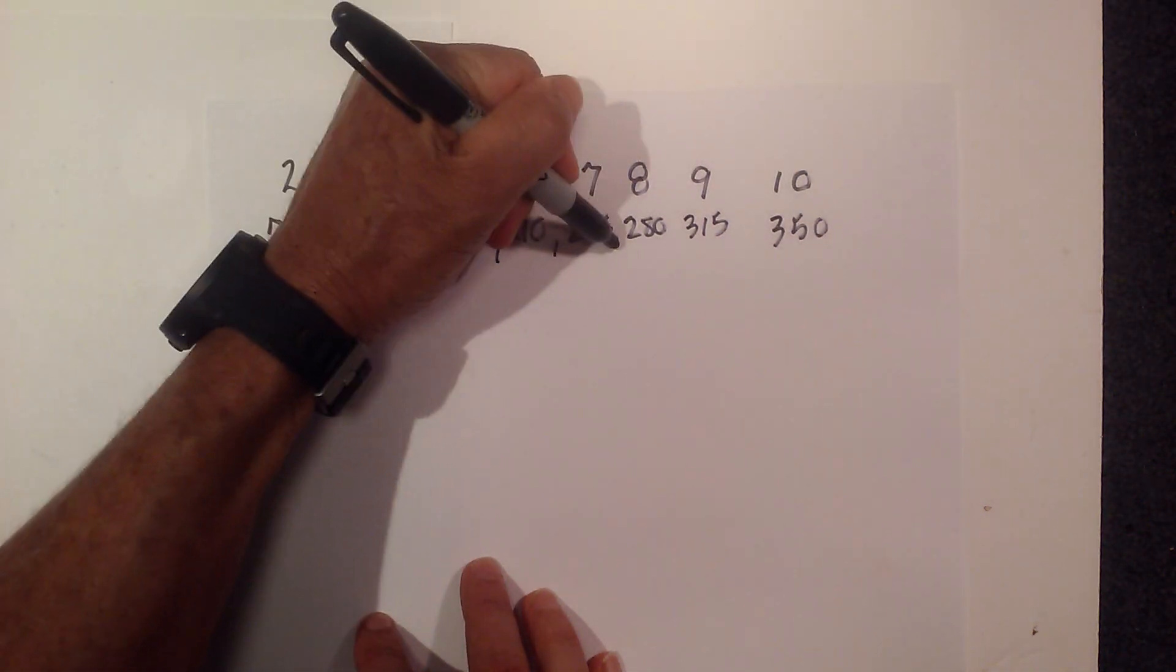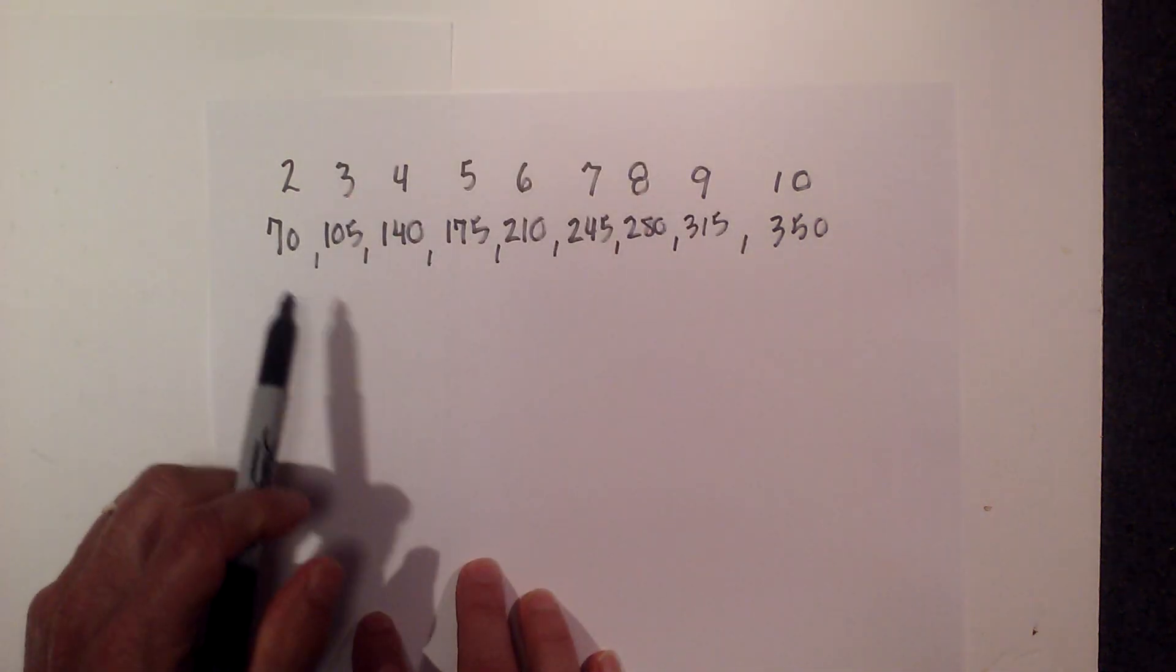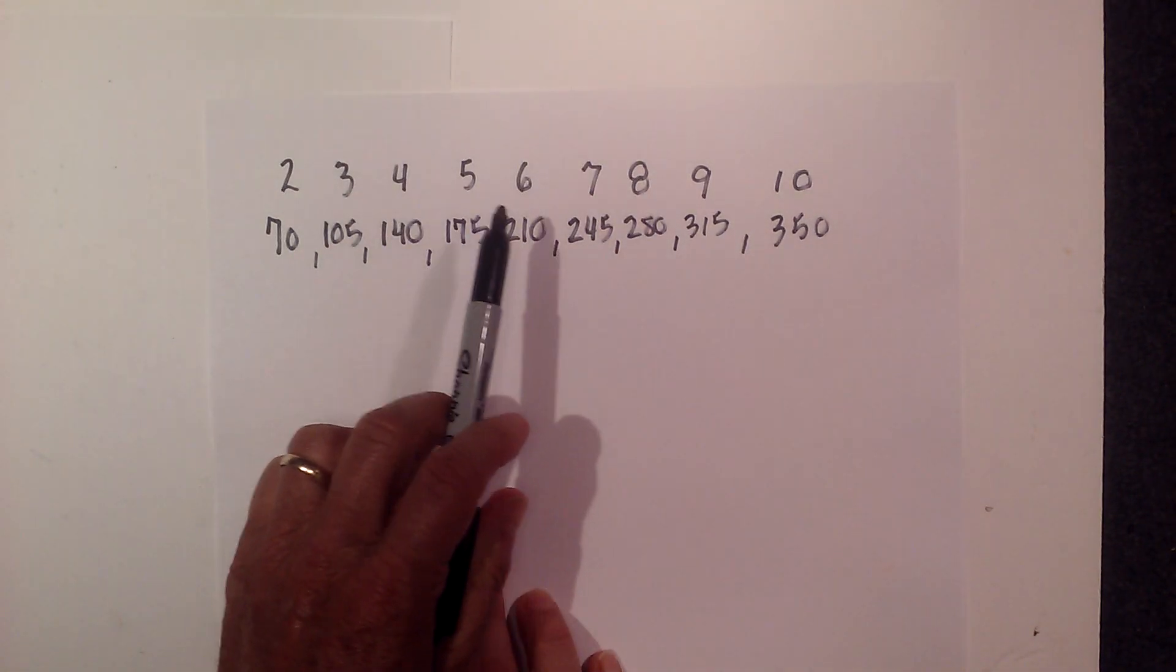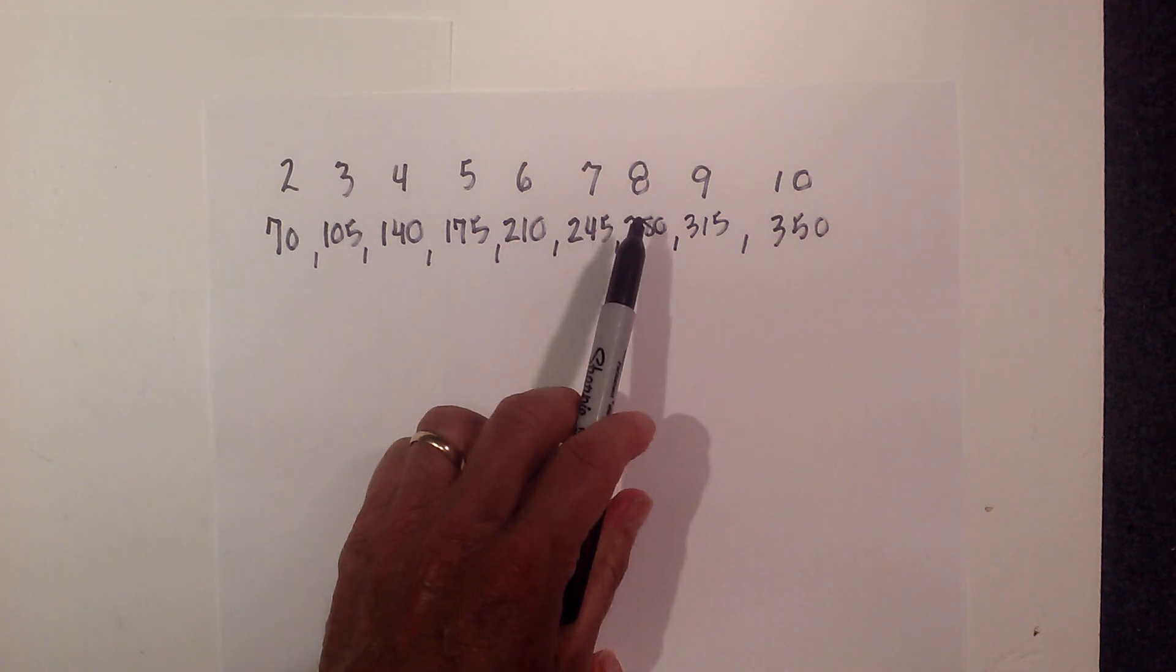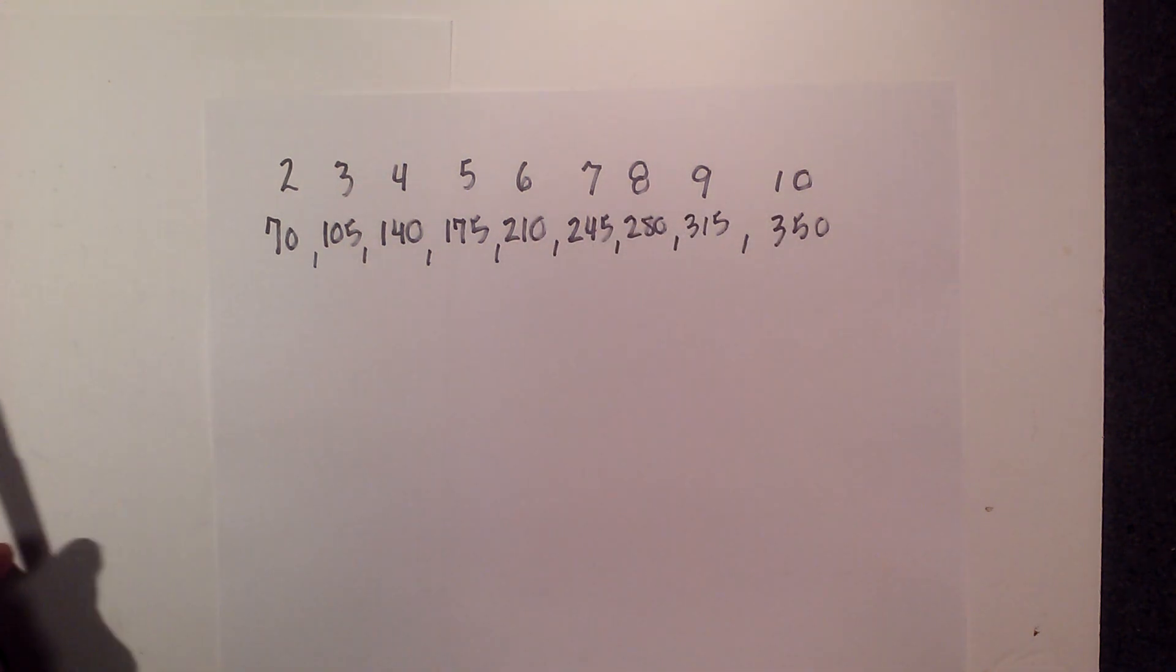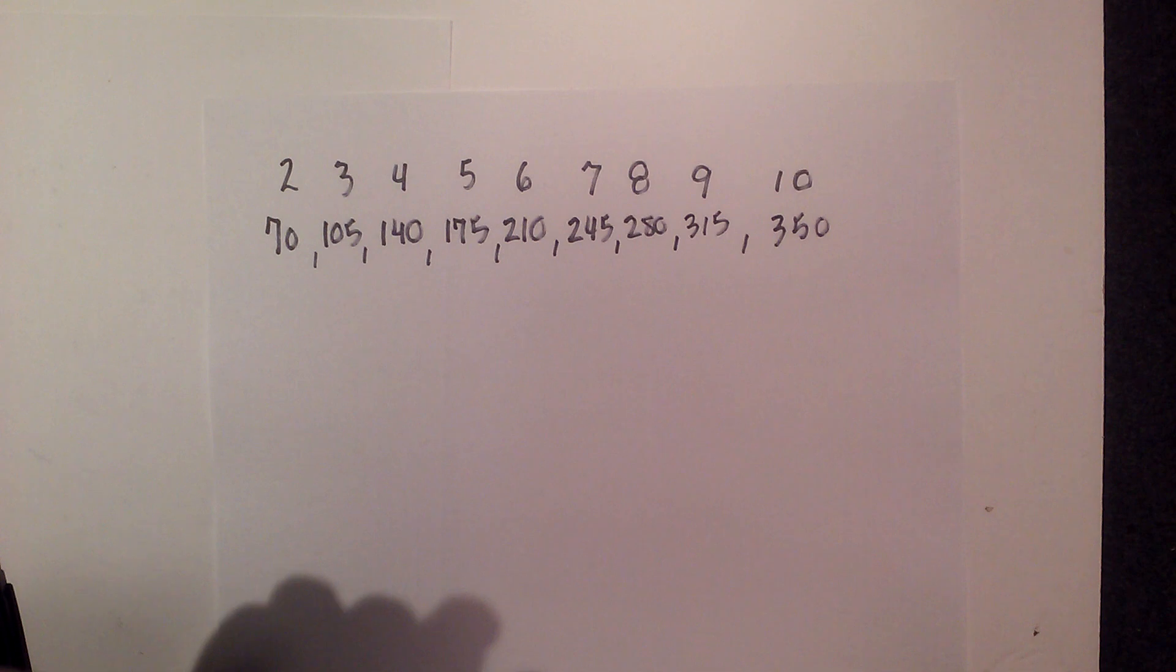So the multiples of 35 are 35, 70, 105, 140, 175, 210, 245, 280, 315, and 350. Thanks for watching and Moomoo Math uploads a new math and science video every day.